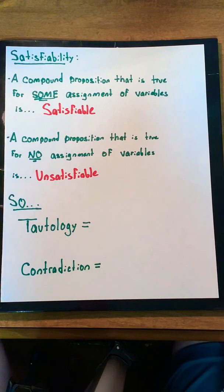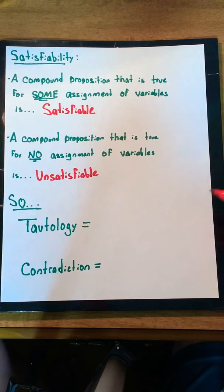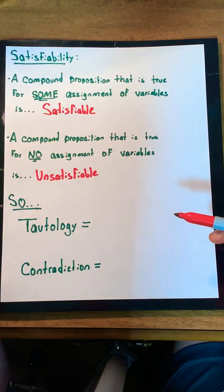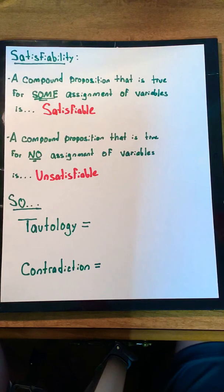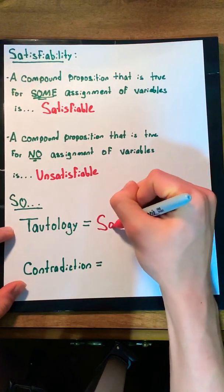Whereas a compound proposition that is true for no assignment of variables is unsatisfiable. So, let's use these definitions to figure out if a tautology and contradiction are satisfiable or unsatisfiable. We know that tautology is always true, and thus, that means that there is some assignment of variables that makes it true. So, a tautology is satisfiable.